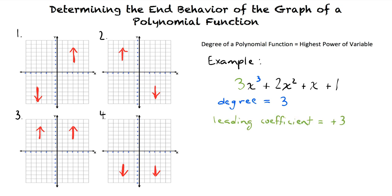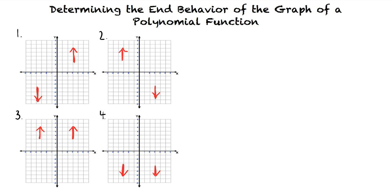The sign of the leading coefficient also matters for this topic. We will look at the degree to see if it is an odd or even number. If it's an odd number, then the graph falls on one side and rises on the other, as in the first two types of end behavior. If the degree is even, then both sides either rise or both sides fall, as in the last two types of end behavior.